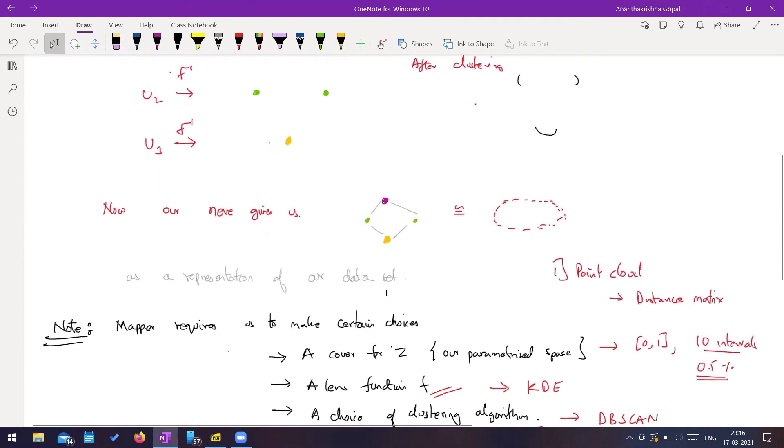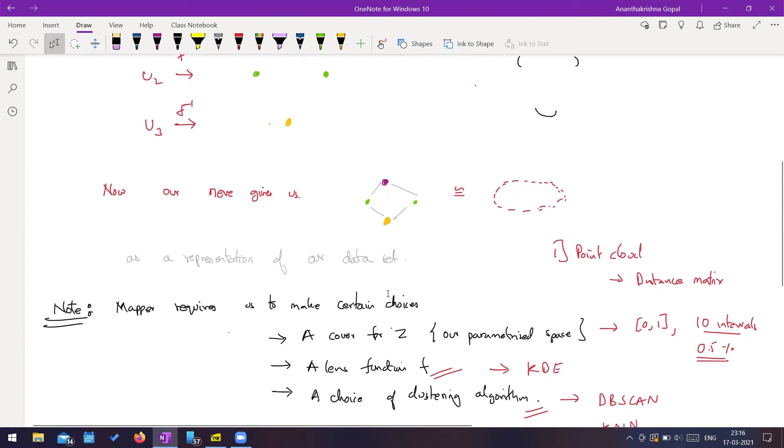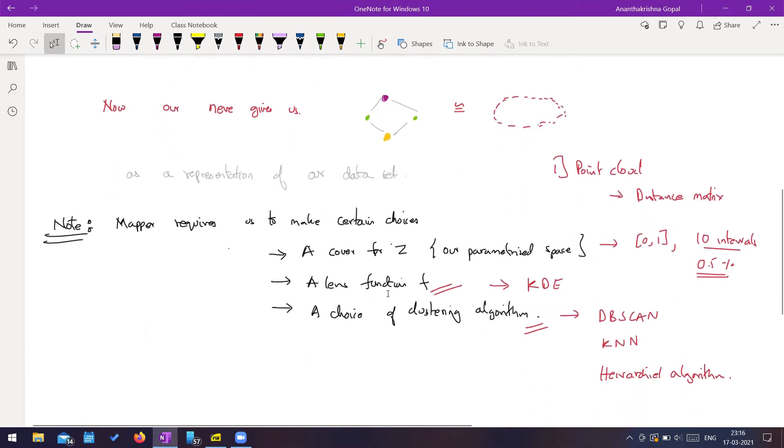Now, the things that you need to know for implementing the algorithm is what are the inputs that you need, and what are the decisions that you have to make. So the first thing that you need is a point cloud. A point cloud may be in terms of coordinates, or else a distance matrix, because that's what you largely care about. So it need not be a metric space. You can just input a distance matrix and be happy with it.